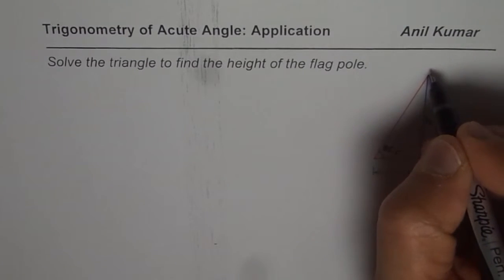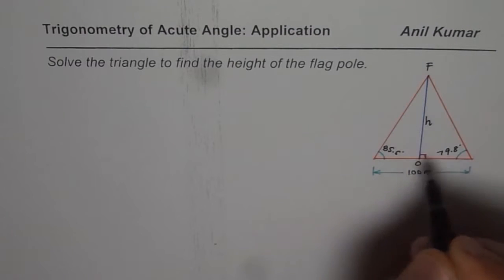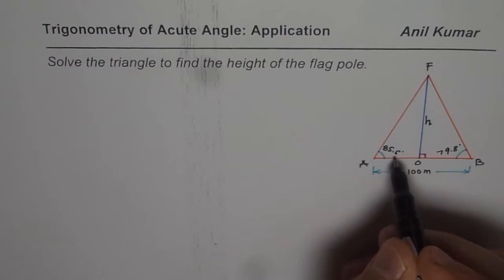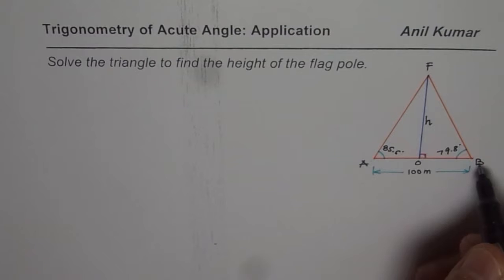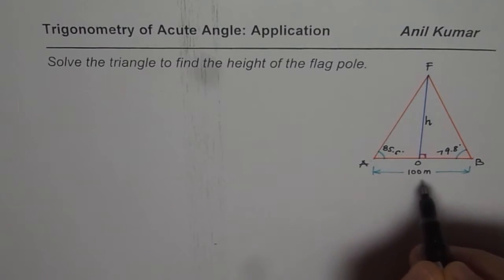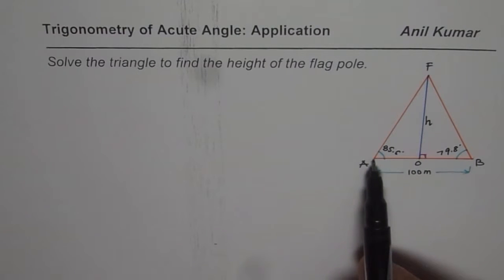So let's say this is our flagpole F O and we have taken some measurements from point A and B on the opposite side of the flagpole. The angle of elevation is 85.6 degrees here and from the other side 79.8 degrees. These two points are 100 meters apart and they are on the opposite side of the flagpole but collinear with the foot of the pole.